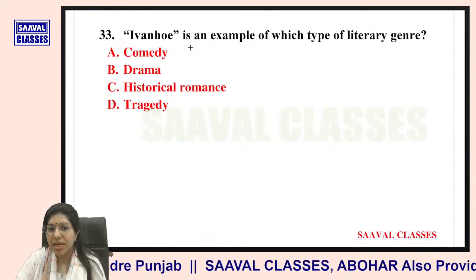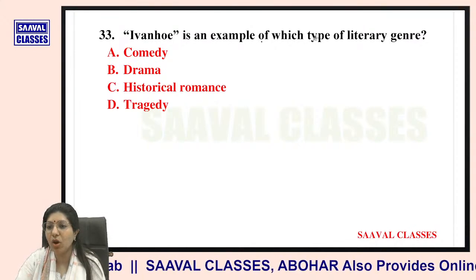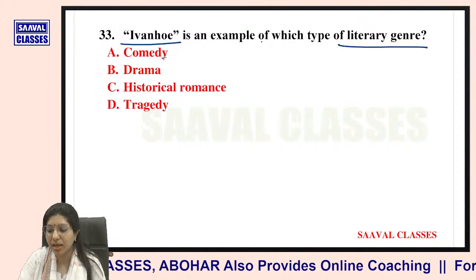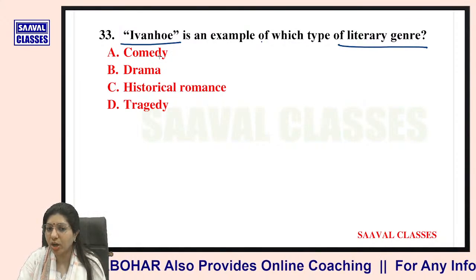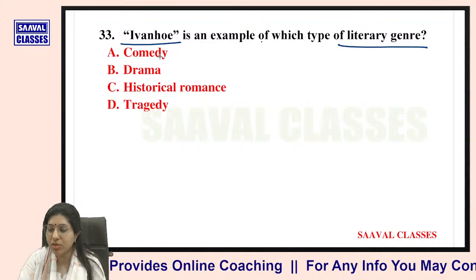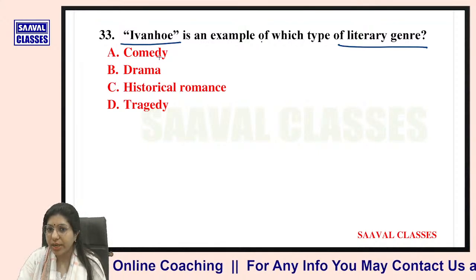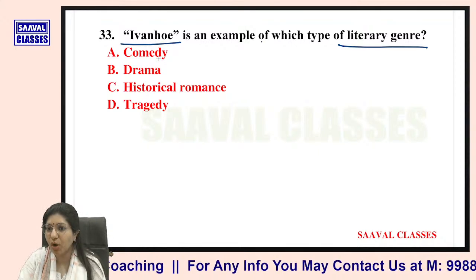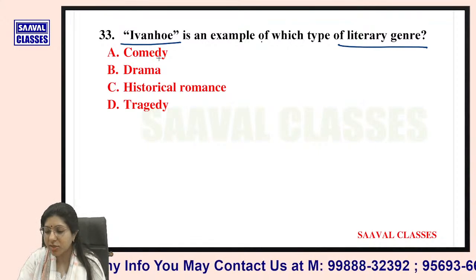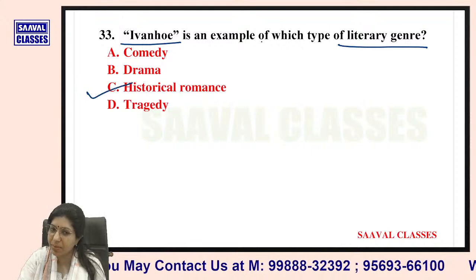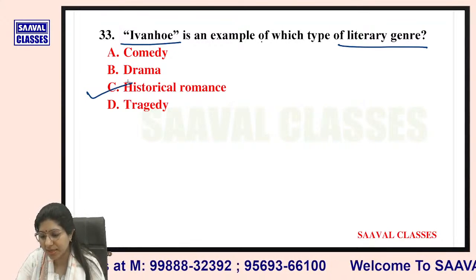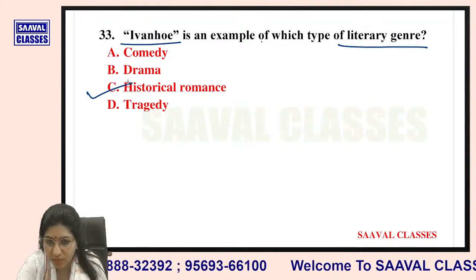Question number thirty-three: Ivanhoe is an example of which type of literary genre? Options are comedy, drama, historical romance, or tragedy. It is a historical romance — Walter Scott wrote mostly historical romances.